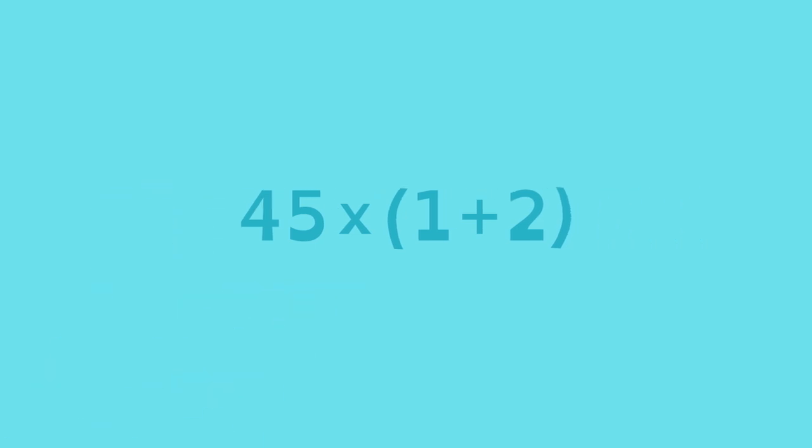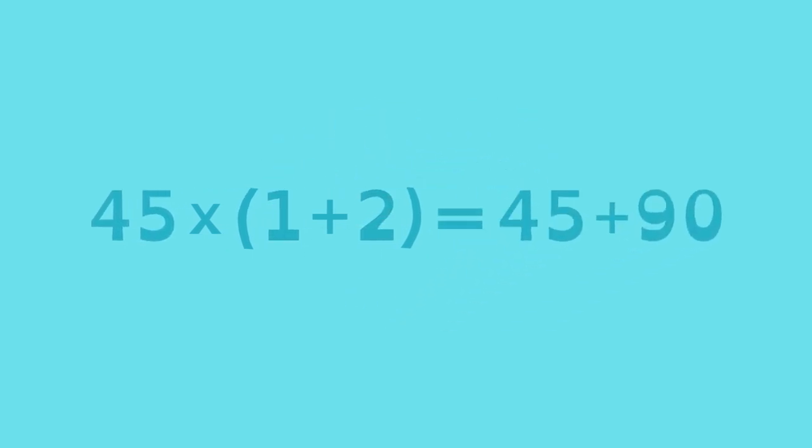Notice that if you apply the distributive property to the expression 45 times the quantity one plus two, you get 45 plus 90.